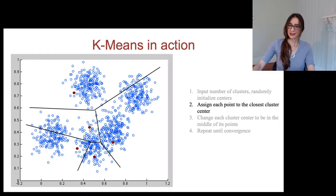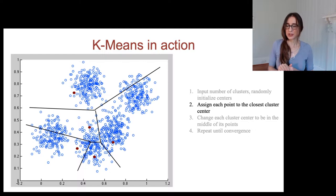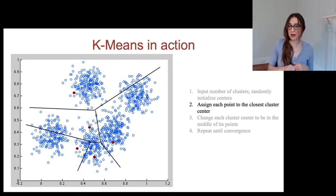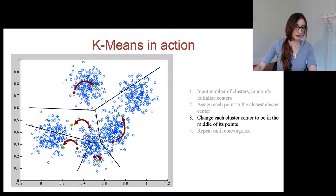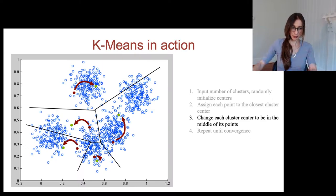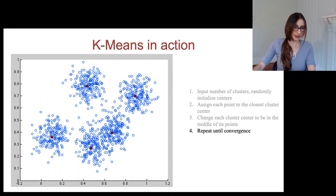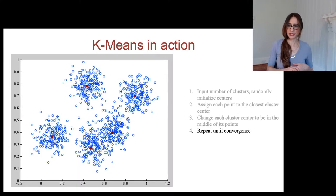We assign each point to the closest cluster center, which produces what's called a Voronoi partition — the space is divided into different regions based on which cluster center each point is assigned to. Then we change each cluster center to be in the middle of its points and repeat until convergence. Hopefully after a few iterations you'll get a nice solution.